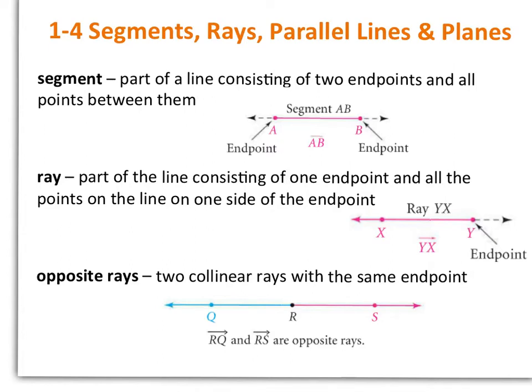So a segment's a part of a line consisting of two endpoints and all points between them. If you look at our example here, segment AB, that is part of the line, so it goes from point A to point B. You could also actually even call this segment BA. Notice it's just a vertical bar above the two capital letters.